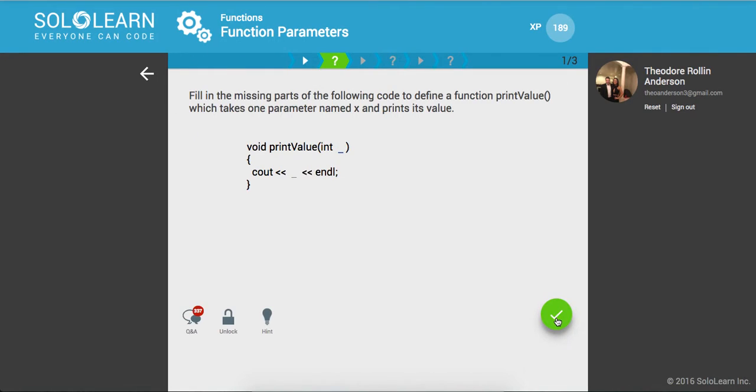So fill in the missing parts of the following code to define a function print value which takes in one parameter named X and prints its value. So it's gonna be called X, then we're gonna print it to the stream.